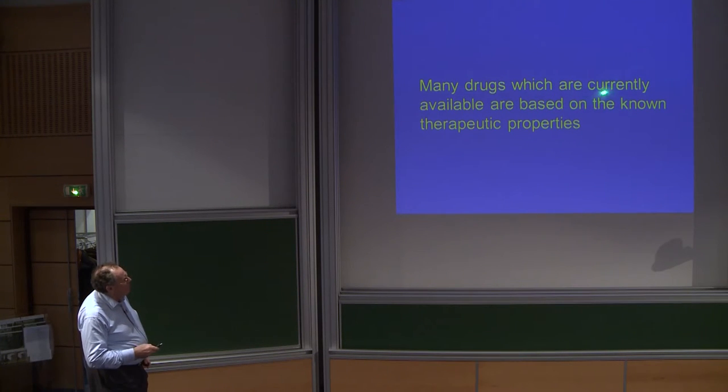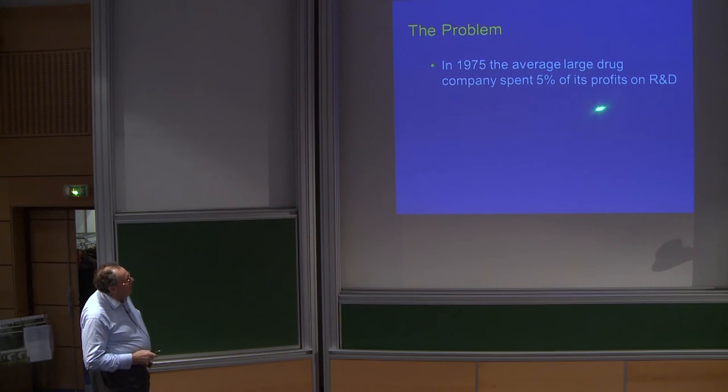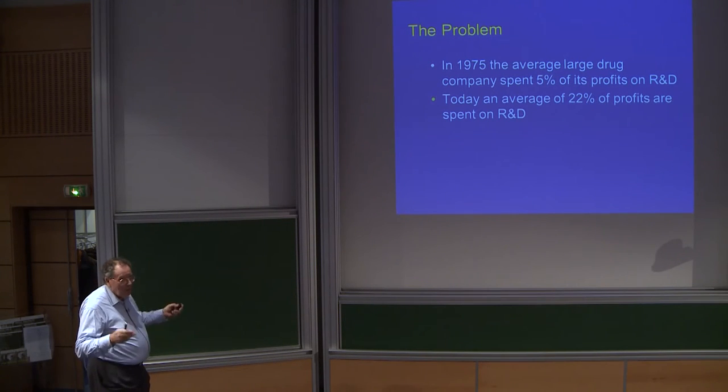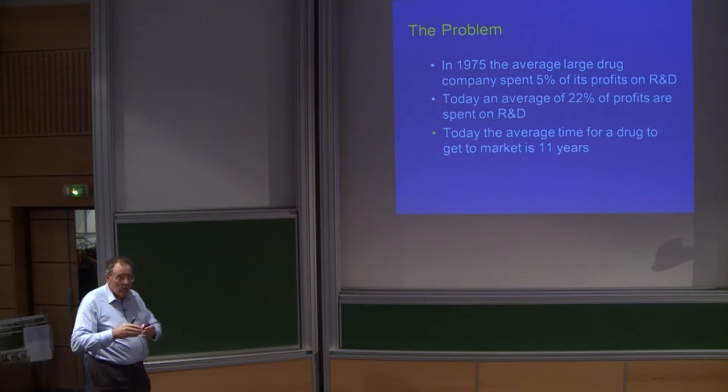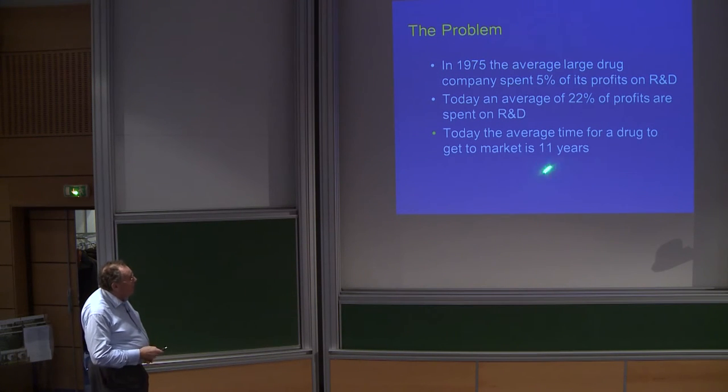Many drugs are currently available based upon known therapeutic properties, but there is a problem. Since 1975, where the average spend of R&D profits within, say, GSK or one of those large drug companies was about 5%, today it is at least 22%, so the cost is going up. Today, the average time for a drug to get to market is 11 years, and when you think of that in an industrial context where you've only got a maximum of about 20 years in terms of patents, that doesn't leave a lot of time.